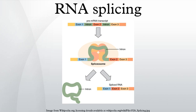Eukaryotes splice many protein-coding messenger RNAs and some non-coding RNAs. Prokaryotes, on the other hand, splice rarely and mostly non-coding RNAs. Another important difference between these two groups of organisms is that prokaryotes completely lack the spliceosomal pathway. Because spliceosomal introns are not conserved in all species, there is debate concerning when spliceosomal splicing evolved. Two models have been proposed: the intron late and intron early models.